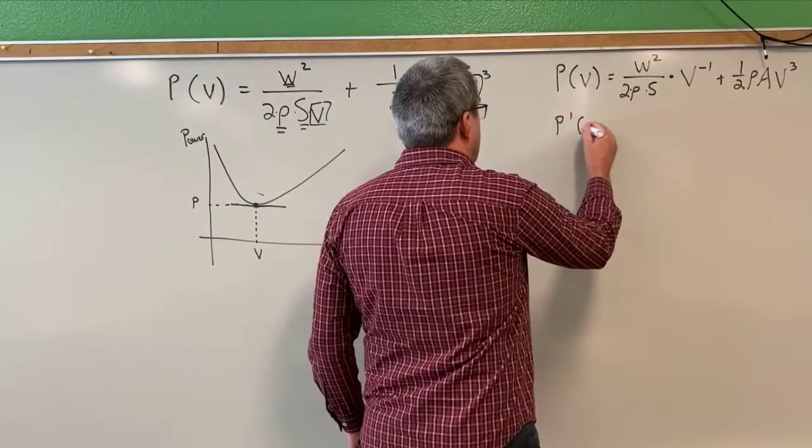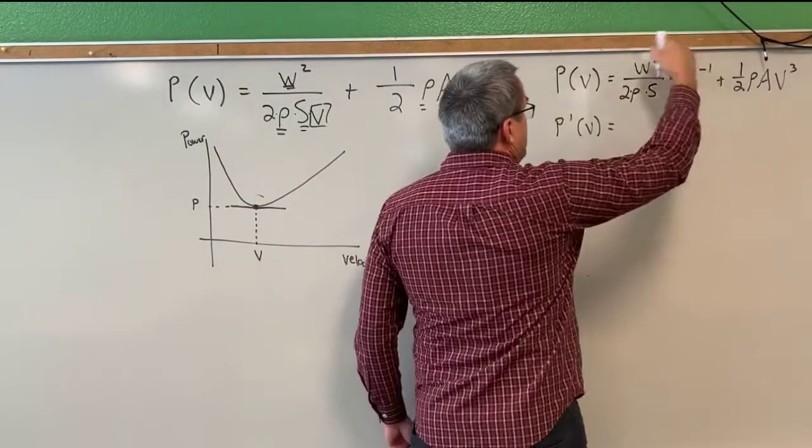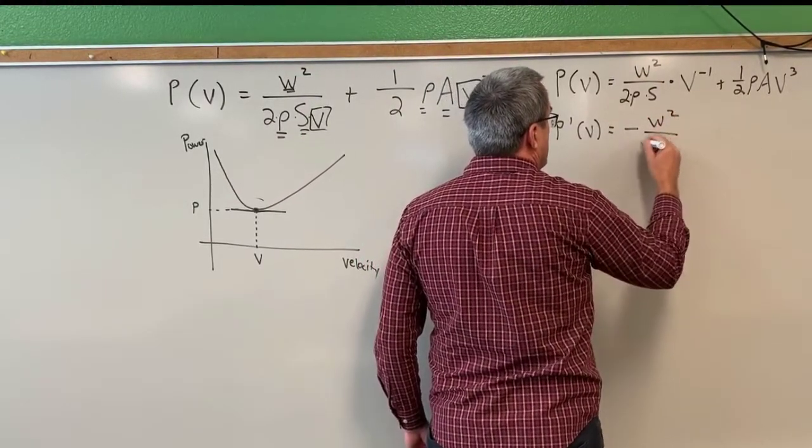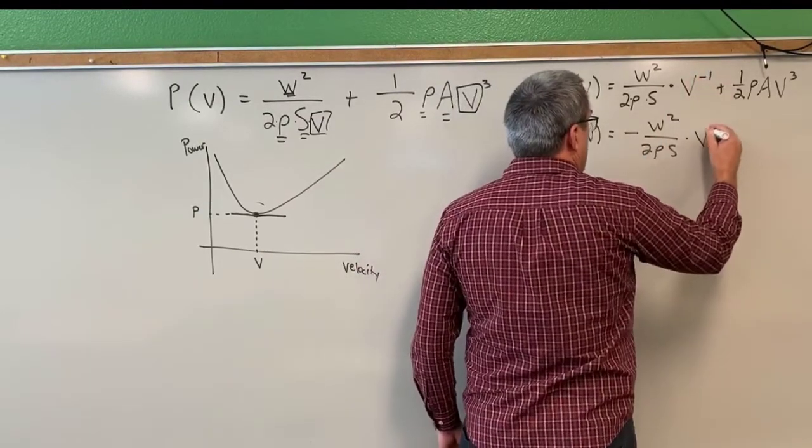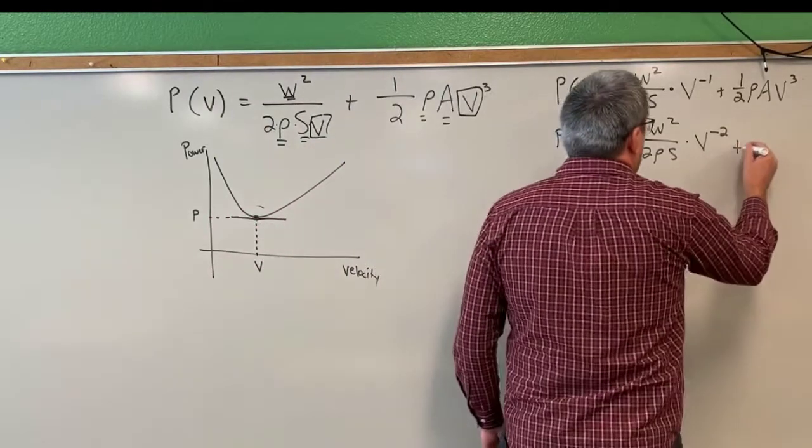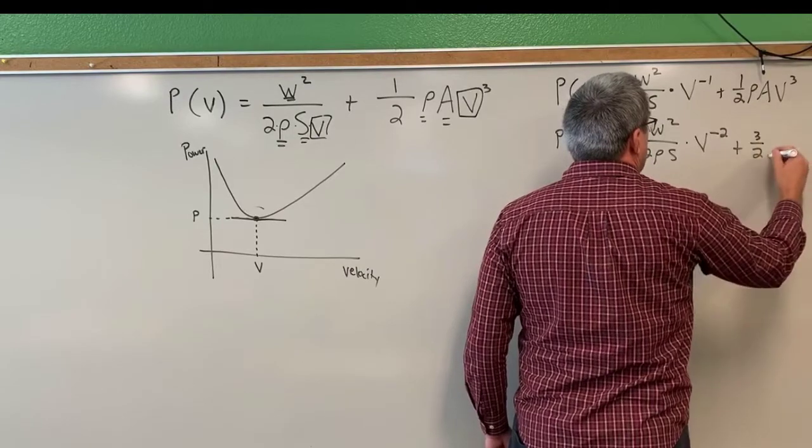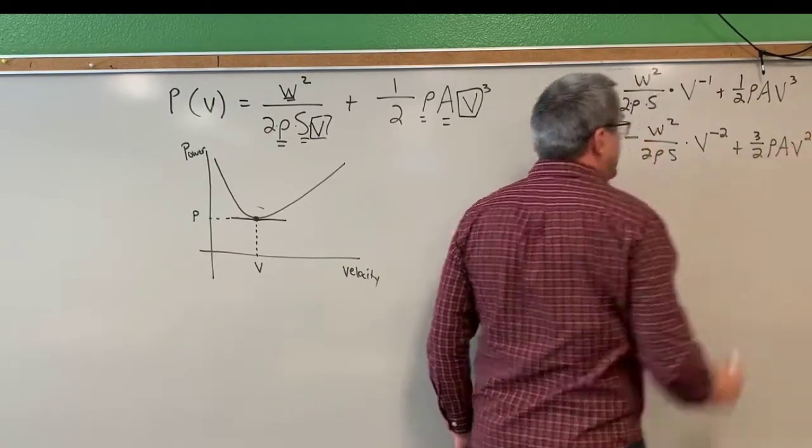So the derivative of P with respect to V, by the power rule. The negative 1 will come out front. So negative W squared over 2 rho S. Decrease that power by 1 by the power rule brings us to negative 2. Bring 3 up front. 3 times 1 half is 3 halves. Rho A V decrease the power by 1 squared.